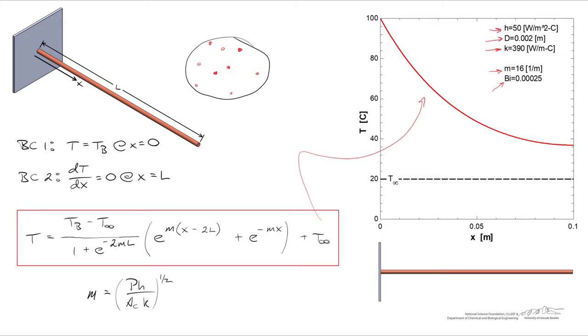The boundary conditions that I've specified is that the temperature of the base is 100 degrees C. I've also specified an ambient temperature, T infinity, of 20 degrees C. And what we observe is that the second boundary condition is satisfied because the slope comes in at zero, where I've chosen a fin length of 0.1 meters or 10 centimeters.